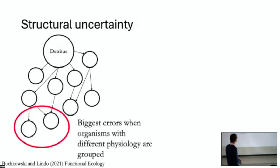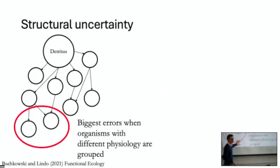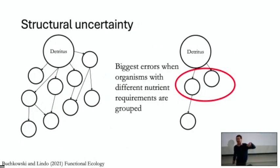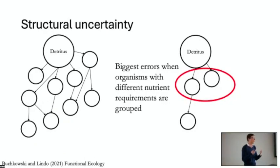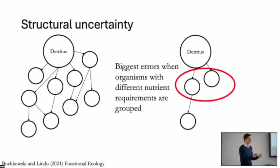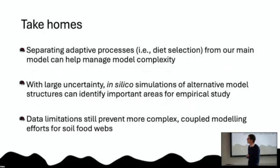Empirically, what this turns out to be is: if we don't know very much about the physiology of the top predators in the system, that creates lots of errors in our model. Similarly, if we don't know much about the nutrient requirements of organisms at the base of the food web, that creates lots of uncertainty in our model. By identifying these empirical gaps, we can say these are the things we should do a better job of measuring in the field to understand and reduce the uncertainty in our models when studying soil systems.